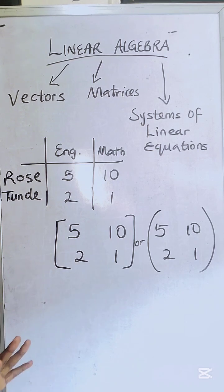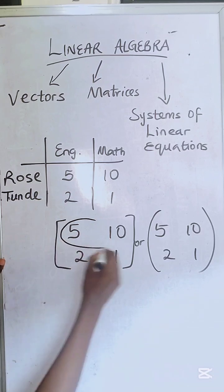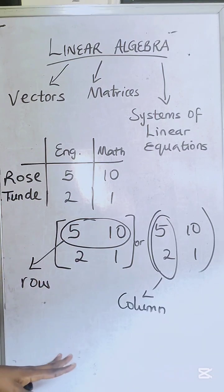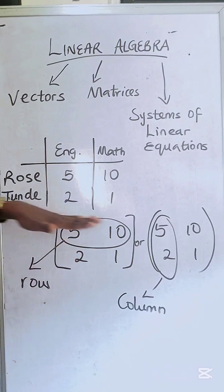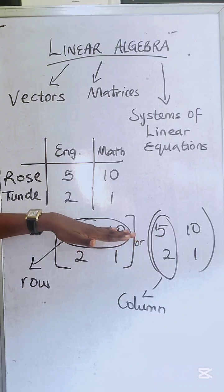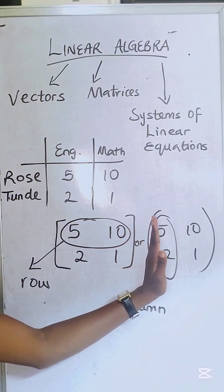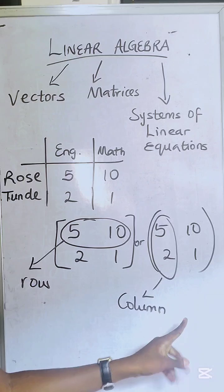I want you to take note of what your rows and columns are. This is your row. The simplest way I can tell you this is, imagine them laying down. That is your row. Now imagine them standing. That is your column.